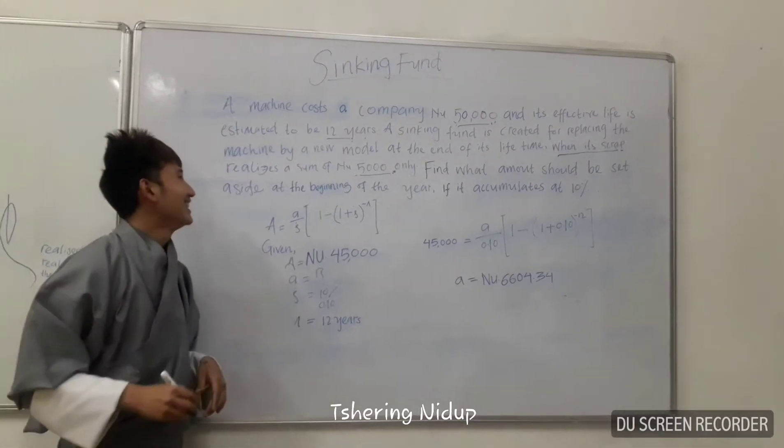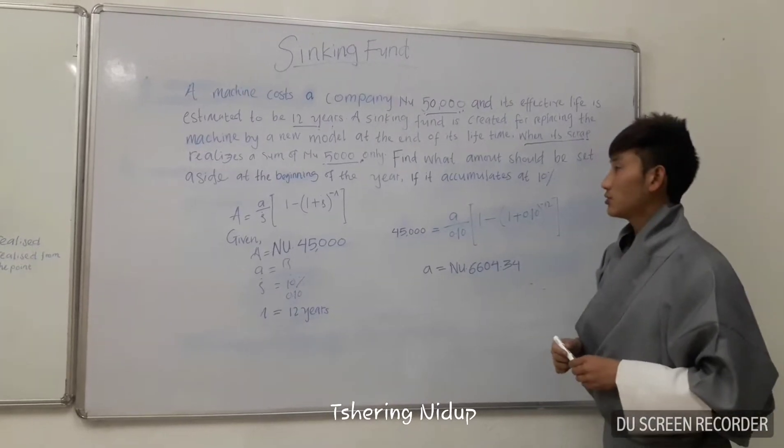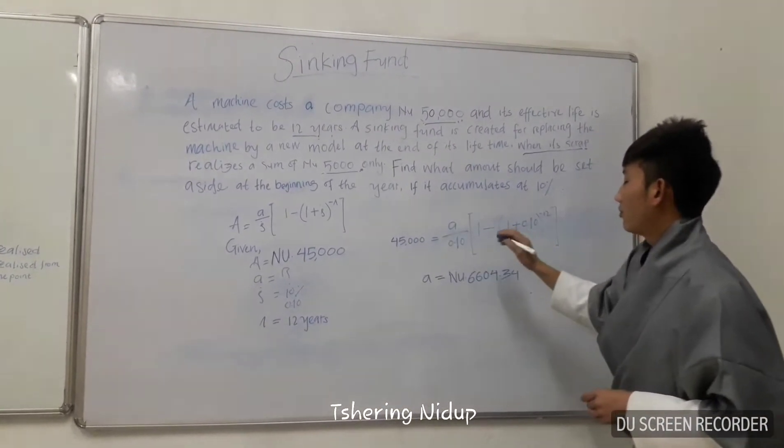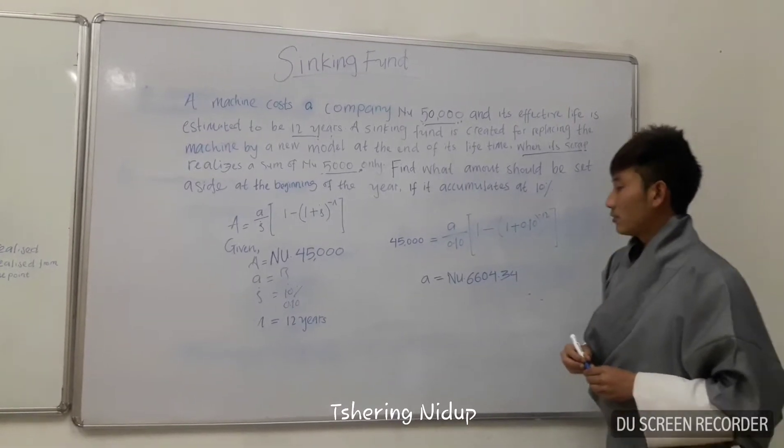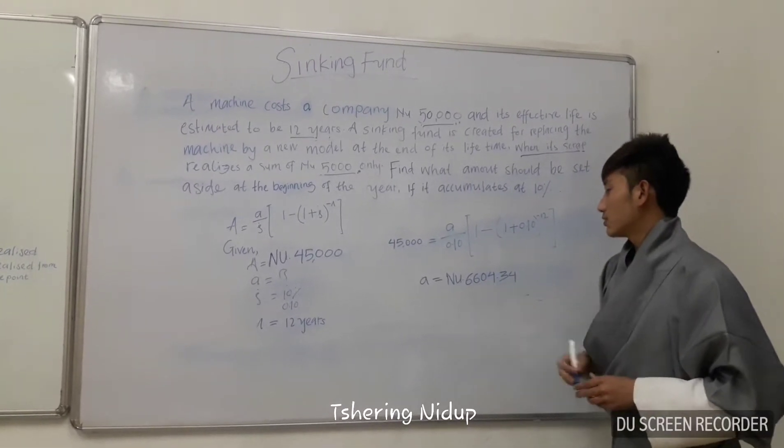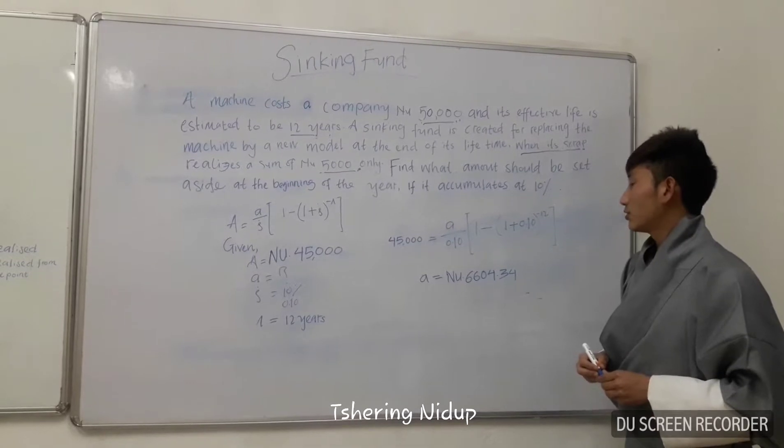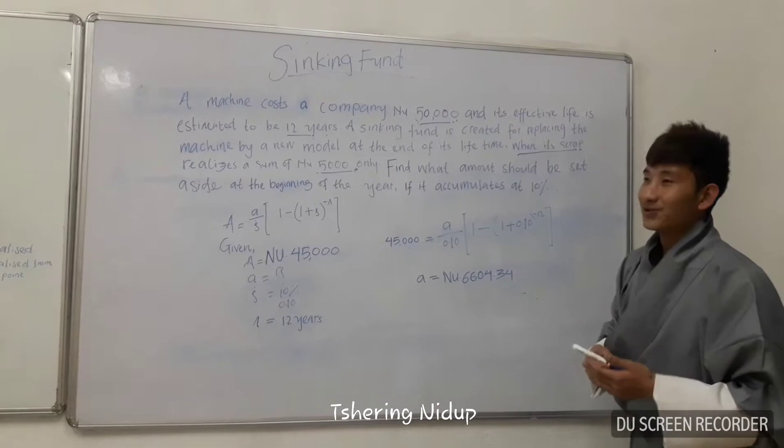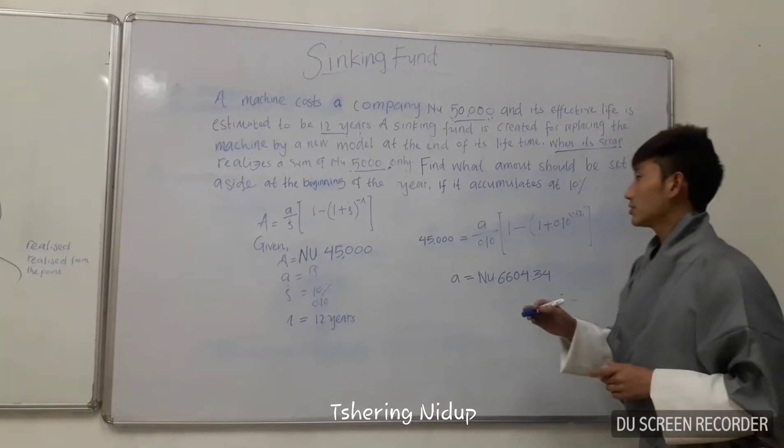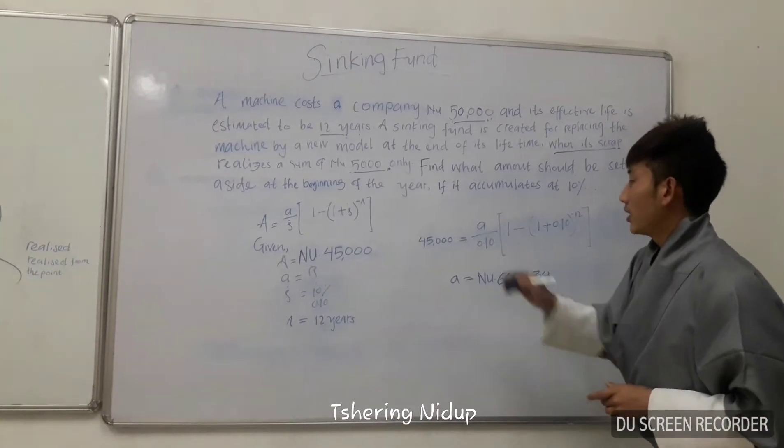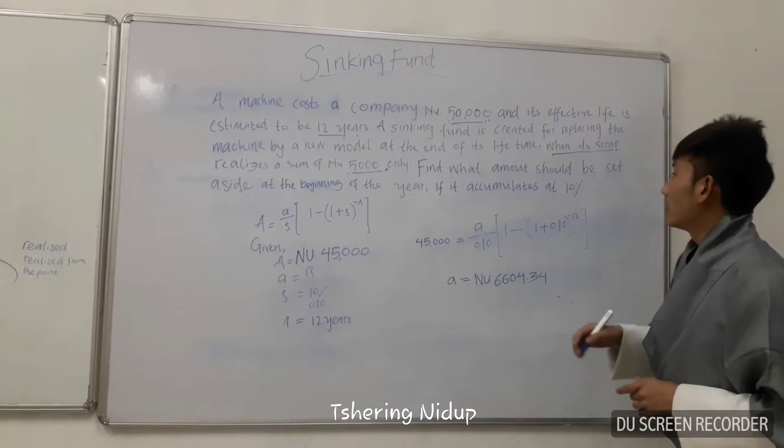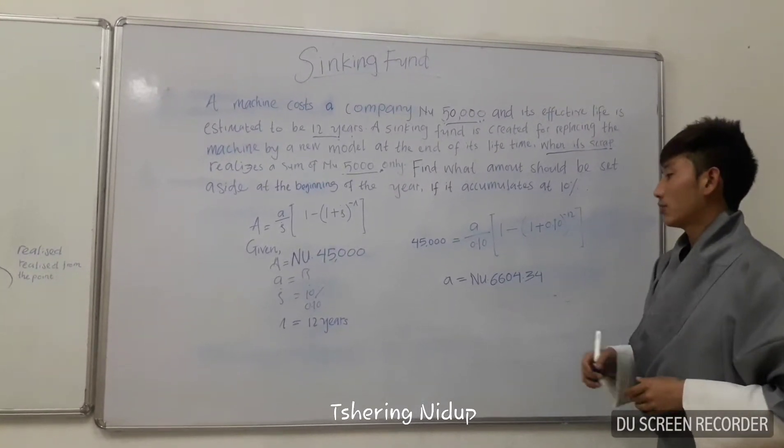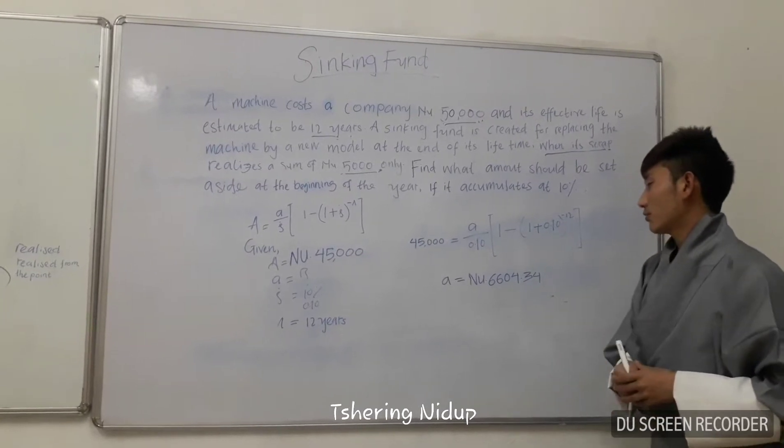By substituting the values in the annuity due formula, the installment amount that should be set aside at the beginning of the year is $6,494.